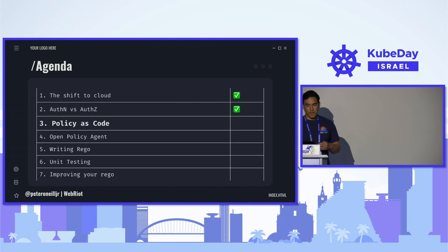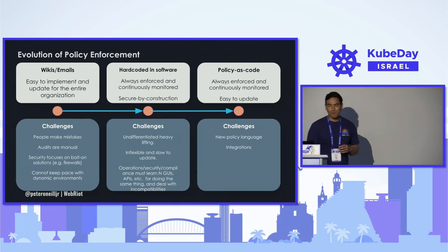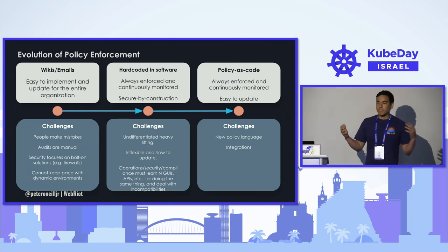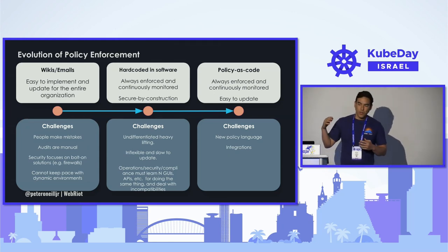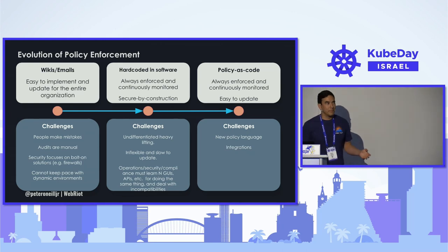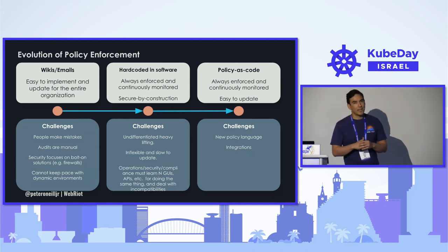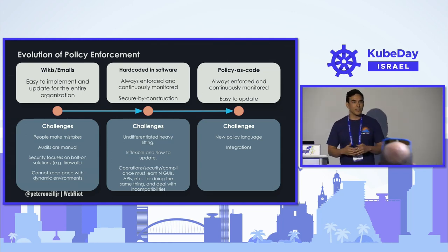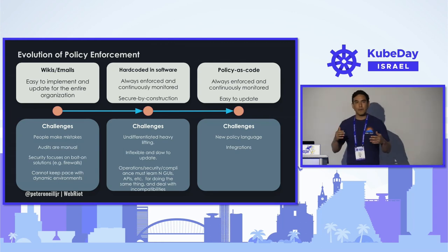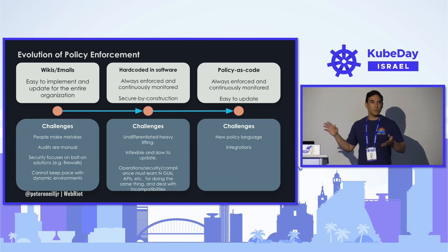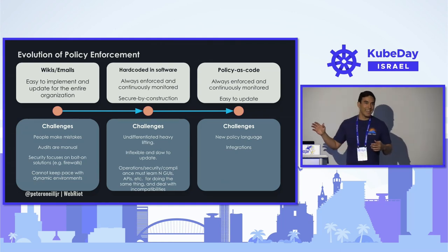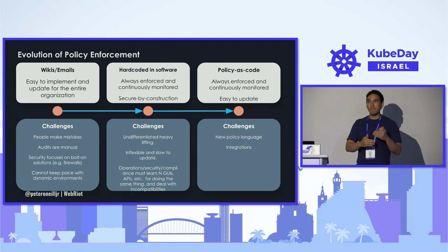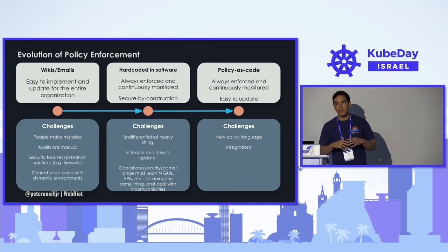The evolution of policy: once upon a time, I remember my first systems job where they gave me access to all the systems when I started — basically root access to everything. It was them saying, 'when you're working with our systems, make sure you don't do this.' Everything was written in a wiki, and who really reads the wiki every time they go to do something? It's something you're manually checking to make sure you're doing the right thing every time, so it's very error-prone.